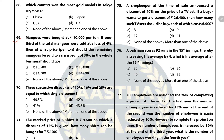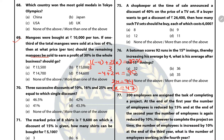Question 69: Mangoes were bought at 10,000 per ton. If one-third of the mangoes were sold at a loss of 4%, at what price should the remaining two-thirds be sold to earn a profit of 30%? Let x be the profit percentage for the remaining. Then: -4 + 2x = 90, so 2x = 94, x = 47. The remaining mangoes should be sold at 147% of cost price, which is 147% of 10,000 = 14,700.